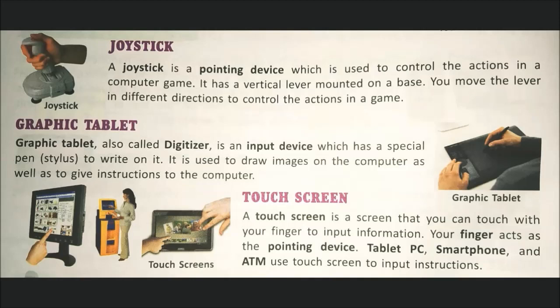Next is graphic tablet. A graphic tablet, also called a digitizer, is an input device which has a special pen to write on it. It is used to draw images on the computer as well as give instructions to the computer. The graphic tablet's special pen, called a stylus, is used to move on the screen and perform drawing work — drawing images can be created and instructions can be given to the computer through it.